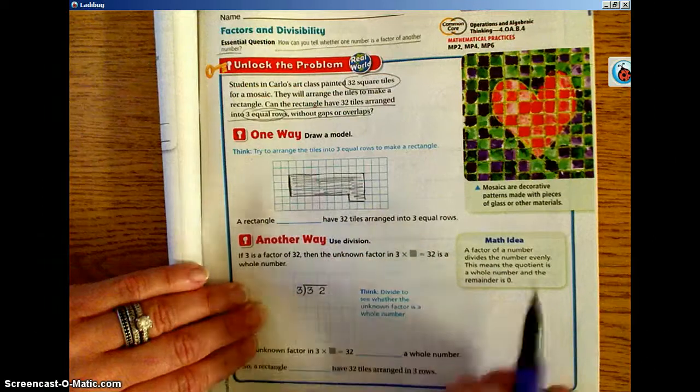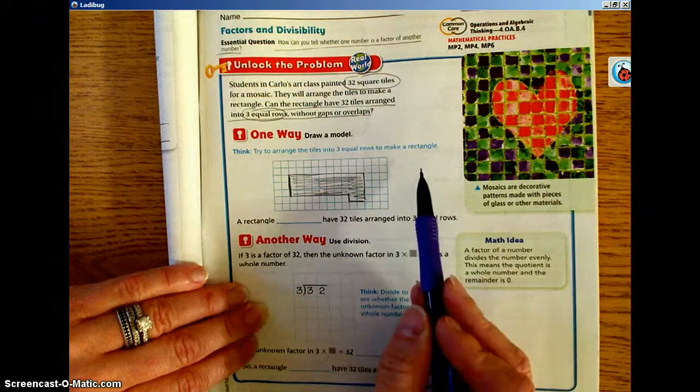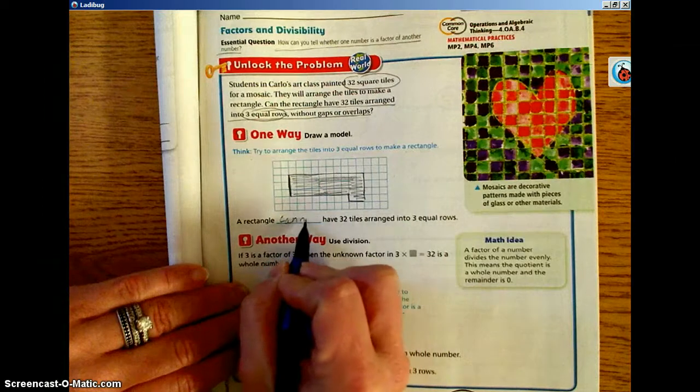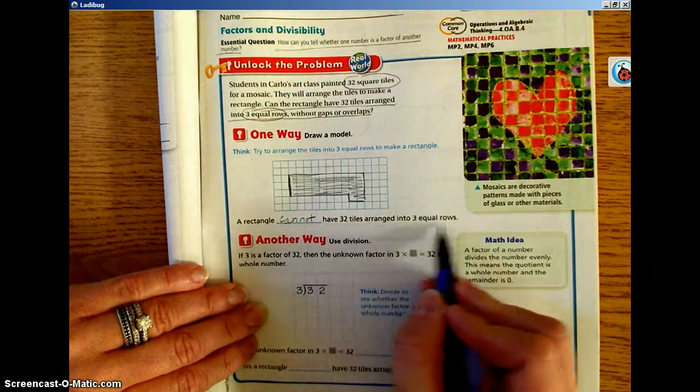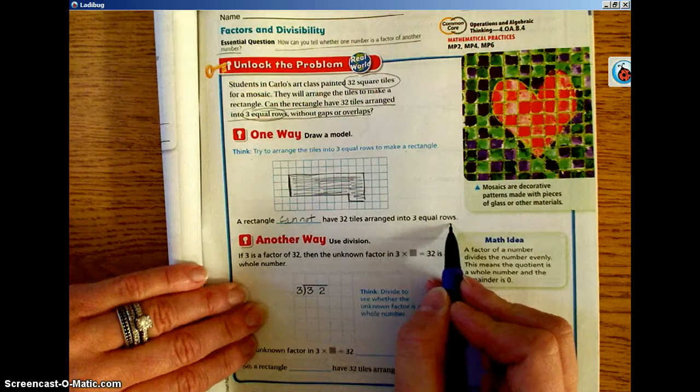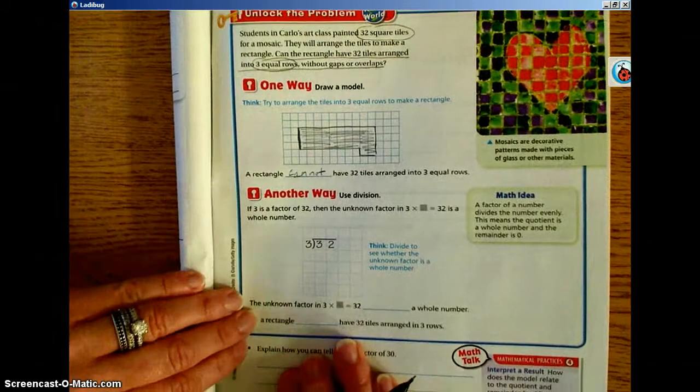So no, we cannot, a rectangle cannot have 32 tiles arranged into 3 equal rows. It's not going to work.